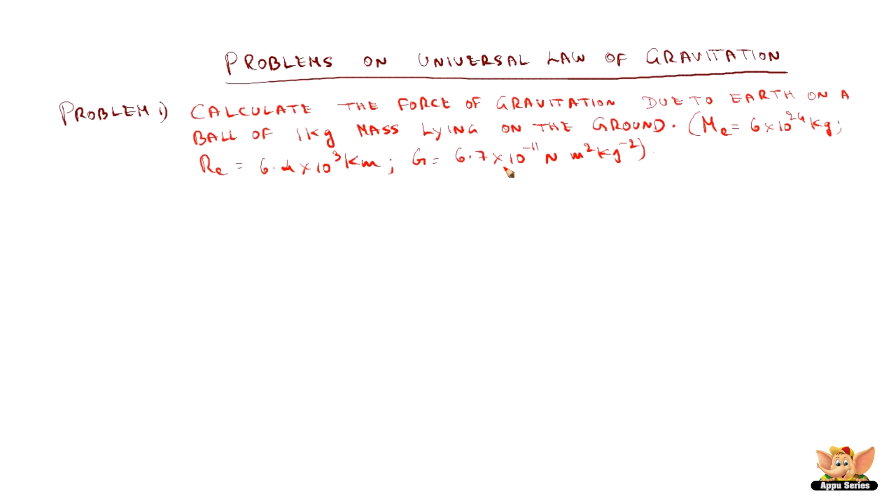So let us see how we calculate this. Given: mass of earth is 6×10²⁴ kg, radius of earth is 6.4×10³ km. We need to convert this into meters: 6.4×10⁶ m, since 1 km = 10³ m or 1000 m. The universal gravitational constant G is 6.7×10⁻¹¹ N·m²·kg⁻².